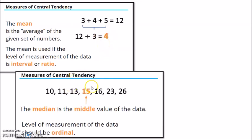Another measure of central tendency is median. Median is the middle value of the data. So first, you have to arrange the numbers or the data from lowest to highest, and then you locate the middle value.